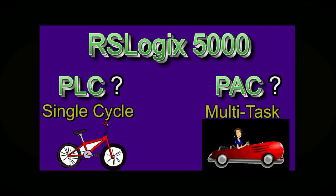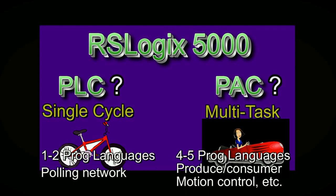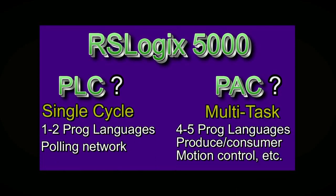A PAC can take the place of multiple PLCs. A PLC typically has 1-2 programming languages, a PAC 4-5. A PLC is restricted to polling a network and backplane in between scan cycles, whereas with a PAC, every module is a device on the Ethernet network.